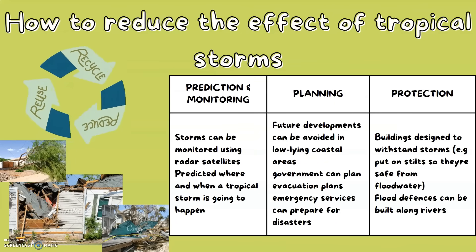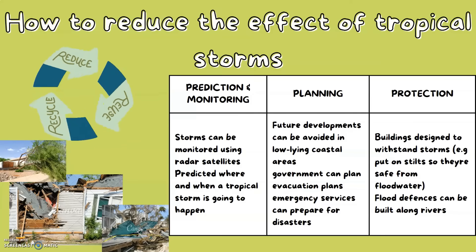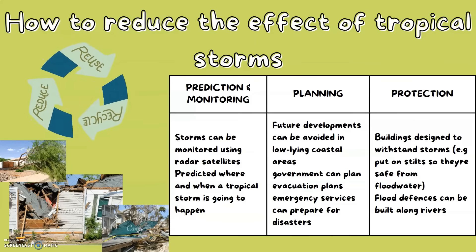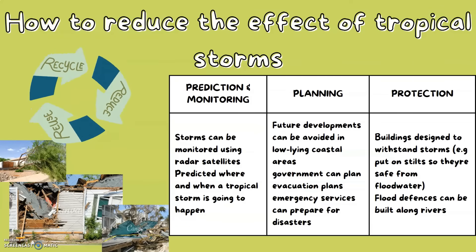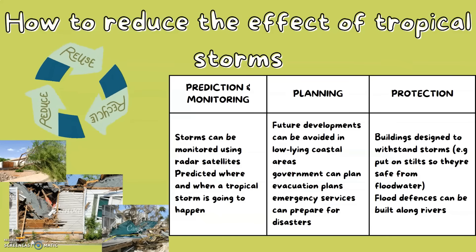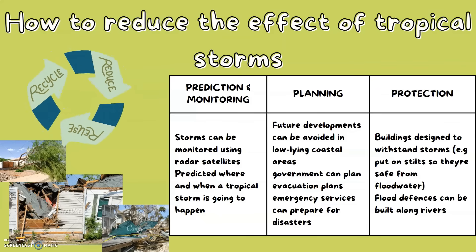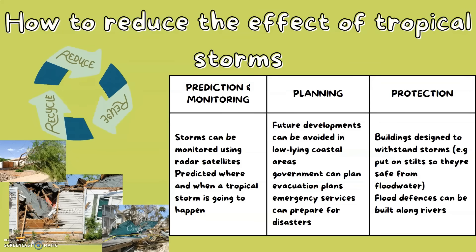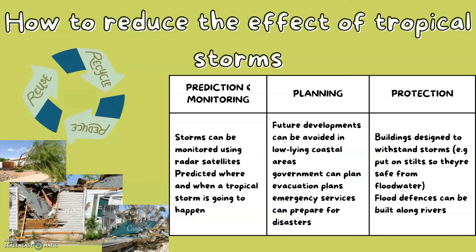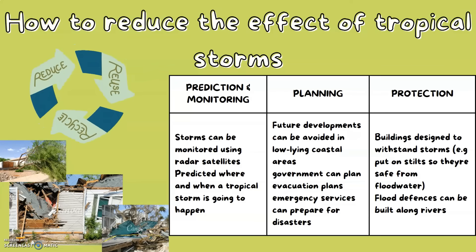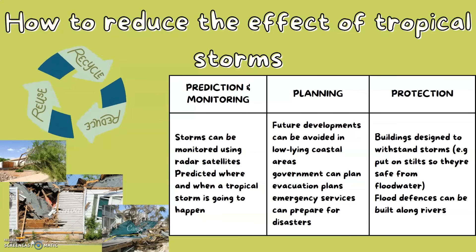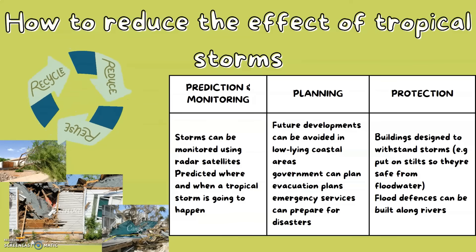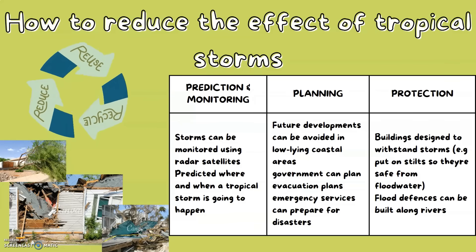How to reduce the effect of tropical storms. There are three ways — prediction and monitoring, planning and protection. Storms can be monitored using radar satellites to predict where and when a storm is going to happen. Future developments can be avoided in low-lying coastal areas and governments can plan evacuation plans and routes and invite emergency services to prepare for disasters. Buildings designed to withstand storms, for example being put on stilts so they are safe from flood water, and flood defences can be built along rivers.